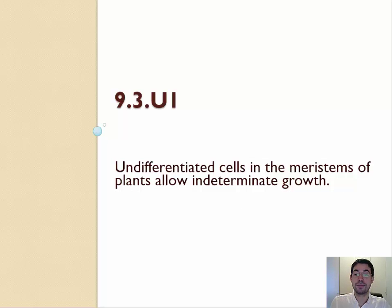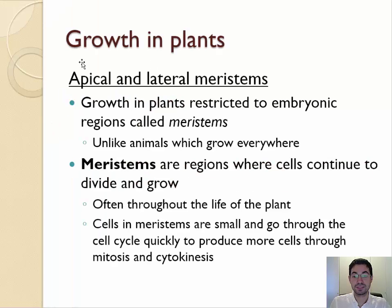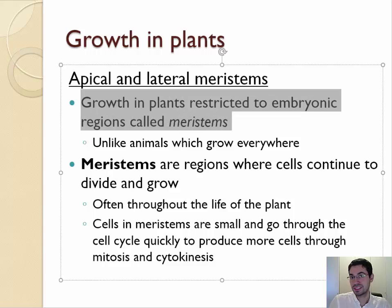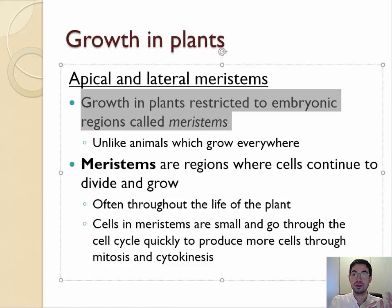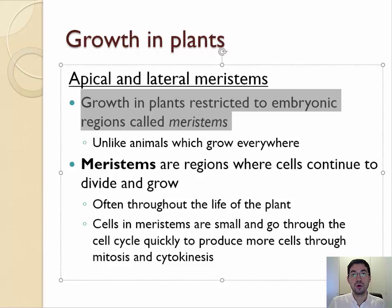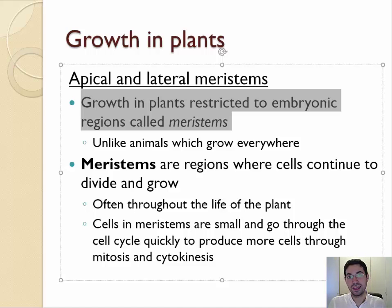Undifferentiated cells in the meristems of plants allow indeterminate growth. There are two types of meristems: apical and lateral. Meristems are embryonic stem cell regions in plants where plants grow. Animals tend to grow everywhere — when you go from a baby human to an adult human, everything gets bigger: fingers get bigger, arms get longer, legs get longer, the head gets bigger, the torso gets bigger. Whereas in plants, when a plant grows new branches, the leaves stay the same size. A baby plant and an adult plant have leaves of the same size.